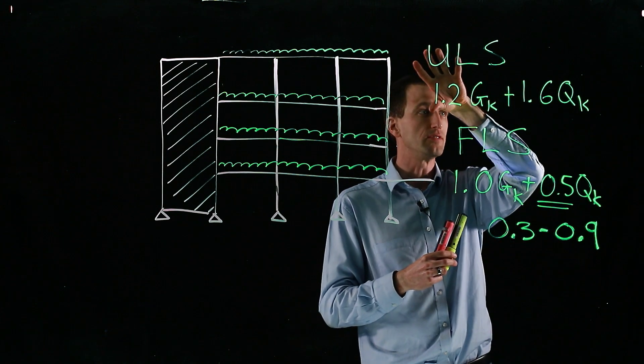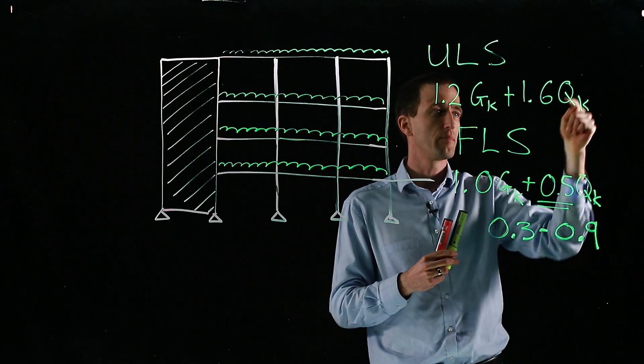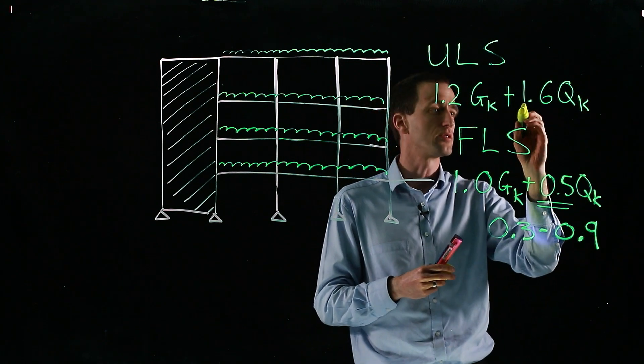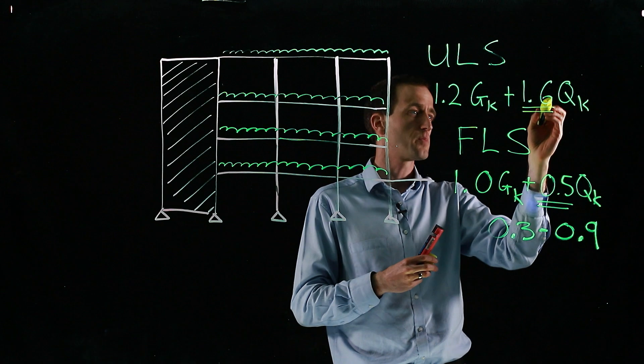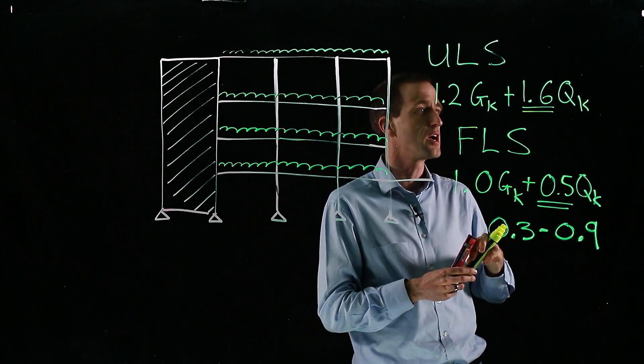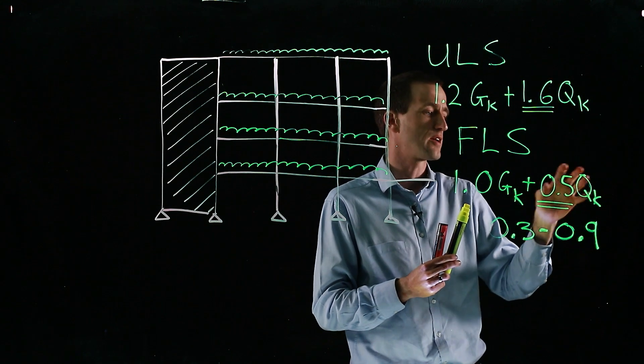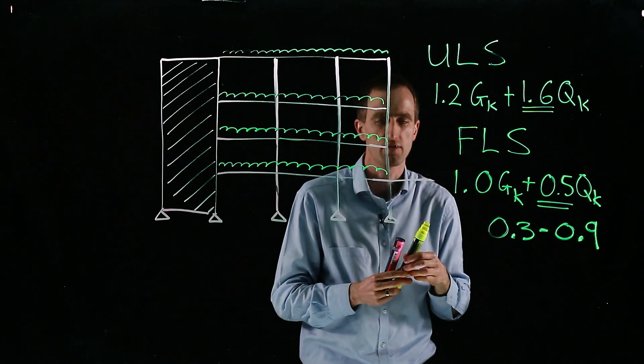So that gives an overview of ambient and then fire limit state. But you can see comparing these, we can have quite significantly lower loads at the fire limit state, especially in a steel structure where the imposed load dominates. Because this is around about a third, depending on which factor you're using.